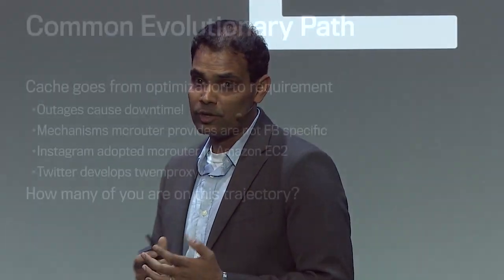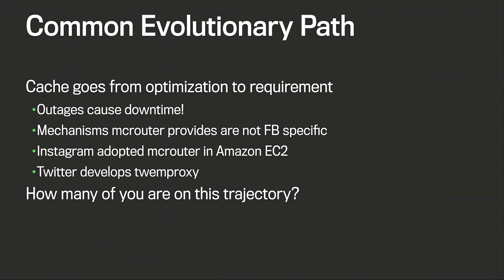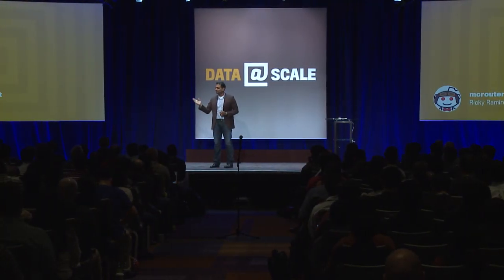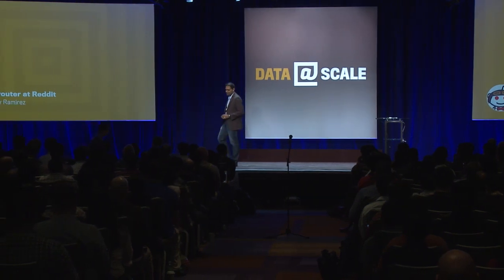This evolutionary path — caches going from a neat little optimization to a production requirement — is something you'll see in many sites. Outages of the cache can cause downtime. The mechanisms McRouter provides are not Facebook-specific; Instagram has adopted it in EC2. Twitter has developed Twemproxy because they realized similar requirements. To introduce how McRouter was used at Reddit, I'm happy to present Ricky Ramirez.